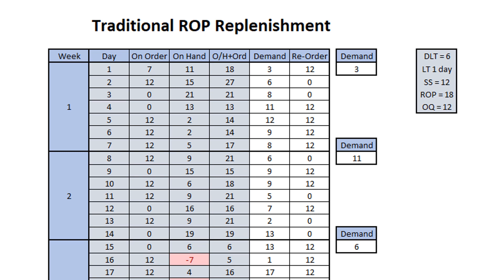Let's see how the reorder point system works. Day 1: we have 7 on order and 11 on hand, equaling 18. With this figure of 18, which is our reorder point, we place a replenishment order of 12 due tomorrow, day 2. The random demand for today is 3. Day 2: yesterday we had 11 on hand plus the 7 that was received, making 18. We shipped 3, leaving an on-hand balance for day 2 of 15. With the 12 on order from yesterday, this gives us 27, which is well above the reorder point of 18, so no replenishment order is required. The random demand for this day is 6, which will leave us with an on-hand balance of 21 at the beginning of day 3.